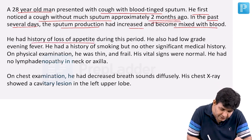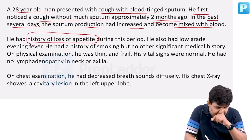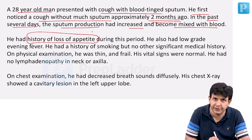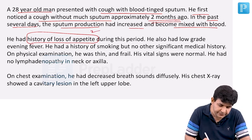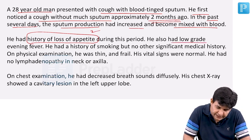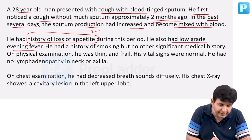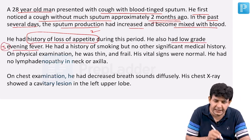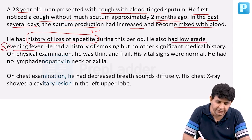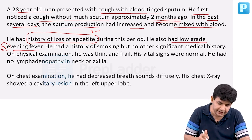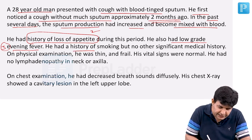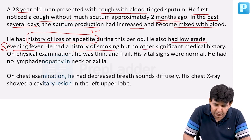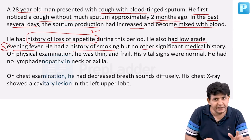He has a history of loss of appetite. Note the various hints in this case. During this period, he also had a low-grade evening fever. Third point: loss of appetite, evening fever, and sputum mixed with blood. He had a history of smoking but no other significant medical history.